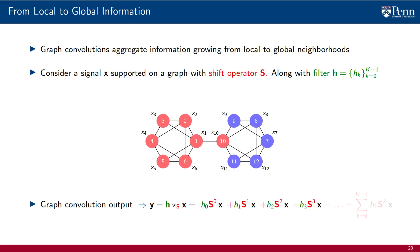We then add the product of S raised to the power of 3 with signal x modulated by coefficient h_3. This is the third component of the diffusion sequence, which aggregates information from three-hop neighbors.